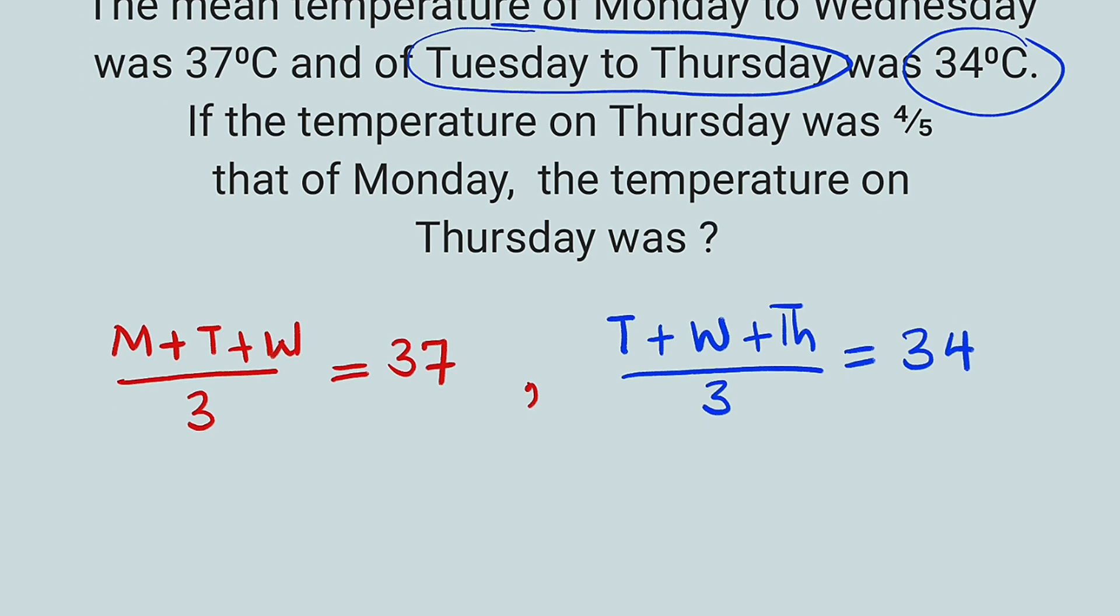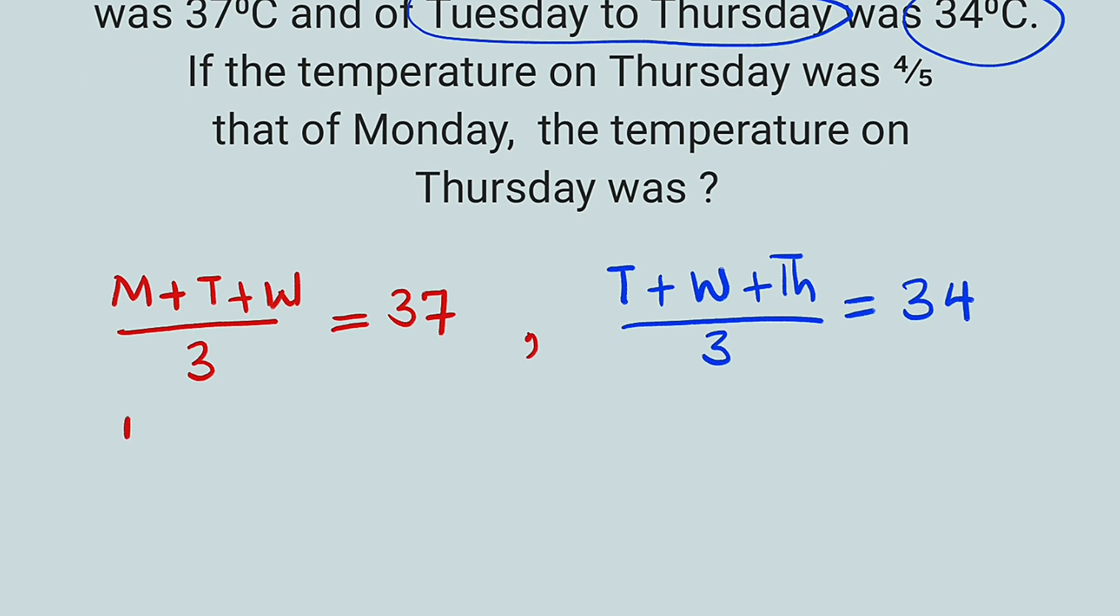Okay, let me simplify the equations. From here, you can see that M plus T plus W is equal to, by cross multiplication, we take these three and multiply by 37, which will give us 111. Then the other one, we have T plus W plus TH to be equal to, if you cross multiply, three times 34 is 102.